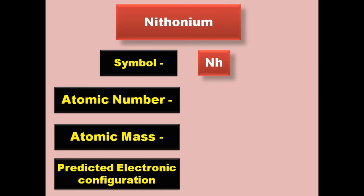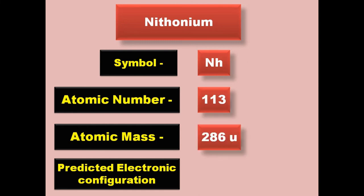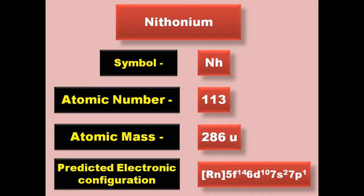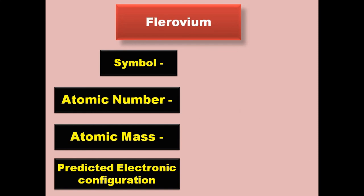Nihonium has symbol Nh, atomic number 113, atomic mass 286, predicted electronic configuration [Rn] 5f14 6d10 7s2 7p1. Nihonium is a post-transition metal and is expected to be solid at room temperature.